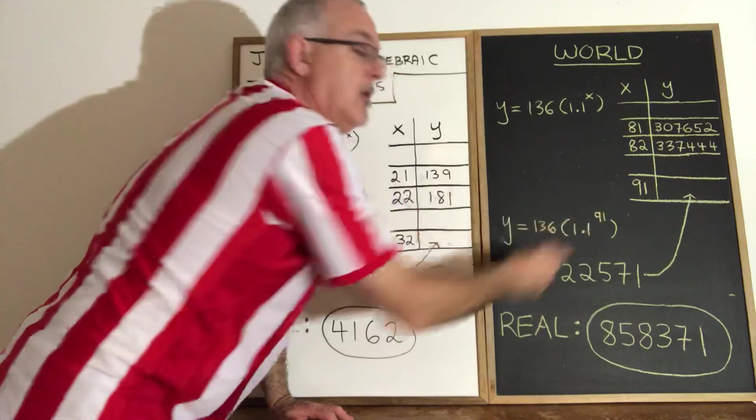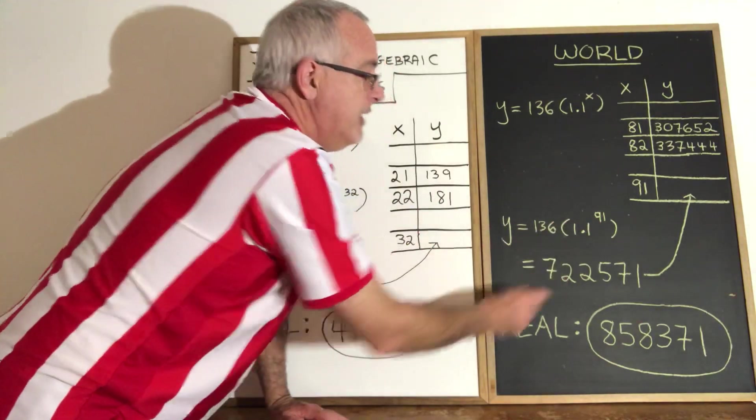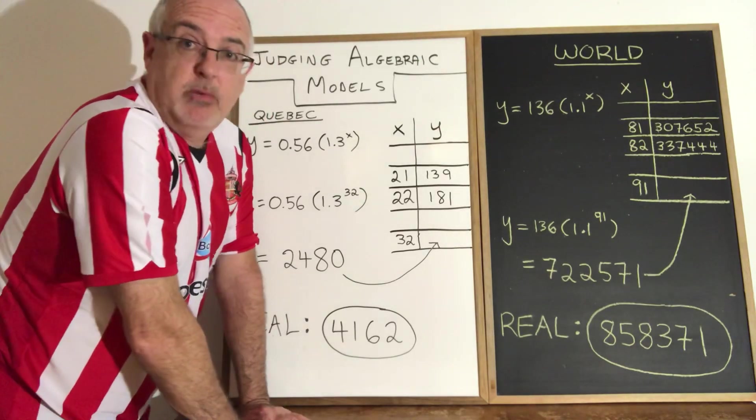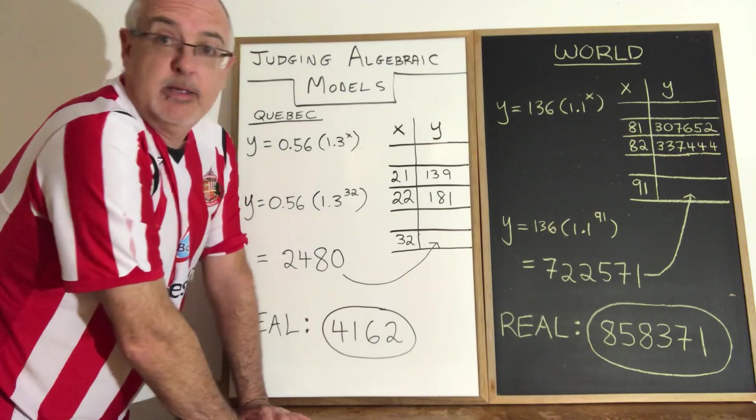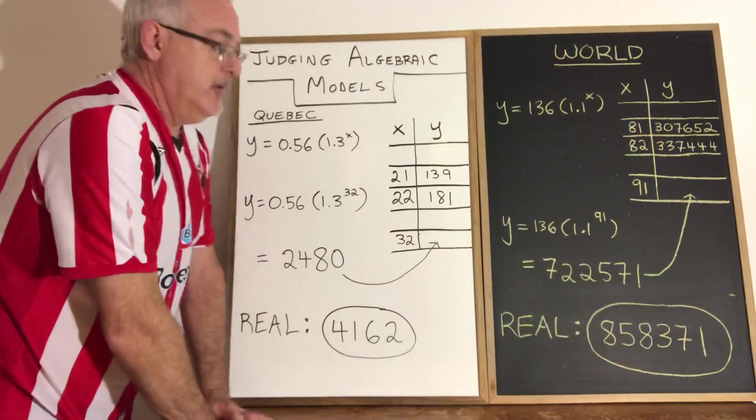We plugged day 91, which again was March 31st, into that equation and we got this value 722,571, and then the real value as reported yesterday, because today is April 1st, was 858,371.